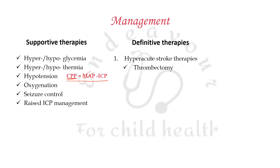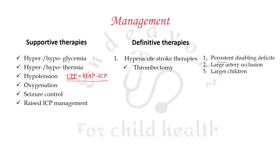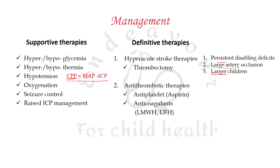Definitive therapies are of three kinds. First are hyperacute stroke therapies, including tissue plasminogen activator and thrombectomy. The AHA-ASA strongly notes their role is controversial in children, but if required, they should be done only in three conditions: persistent disabling deficits, large artery occlusion (ACA, MCA, PCA, or ICA), and in larger children in whom vessels are large enough for catheterization.